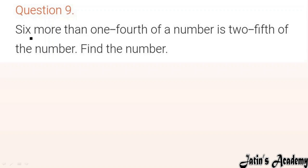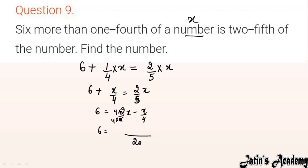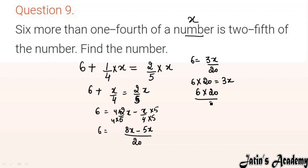Question 9: 6 more than 1/4th of a number is equal to 2/5th of the number. Let the number be x. So 6 plus x/4 equals 2x/5. Moving variables: 6 equals 2x/5 minus x/4. Taking LCM of 20: 6 equals (8x minus 5x)/20, which gives 6 equals 3x/20. Multiplying both sides by 20 and dividing by 3: x equals 6 times 20 divided by 3 equals 40. The number is 40.